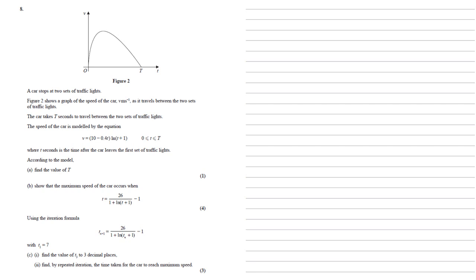A car stops at two sets of traffic lights. Figure 2 shows a graph of the speed of the car, v metres per second, as it travels between the two sets of traffic lights. The car takes t seconds to travel between the two sets of traffic lights. The speed of the car is modeled by the equation v equals 10 minus 0.4t, all multiplied by ln t plus 1.